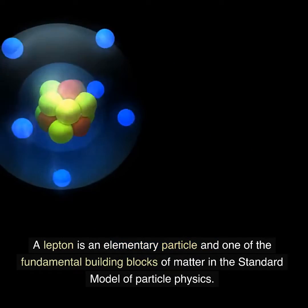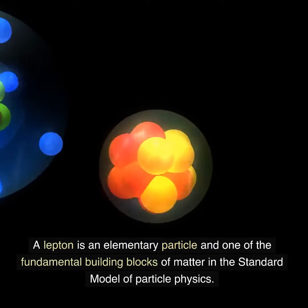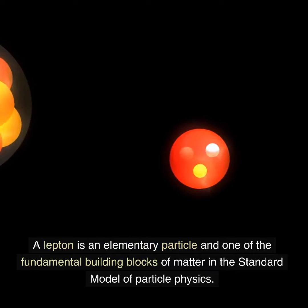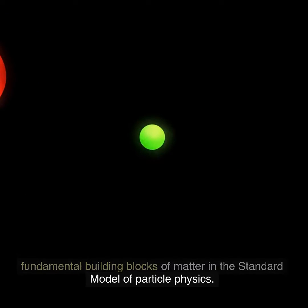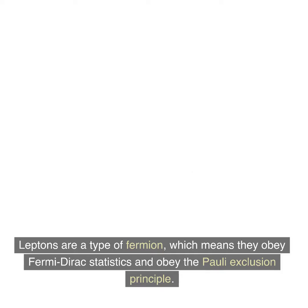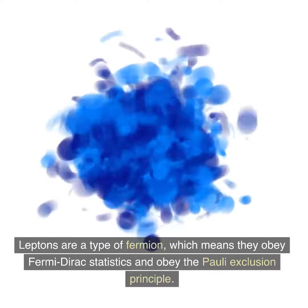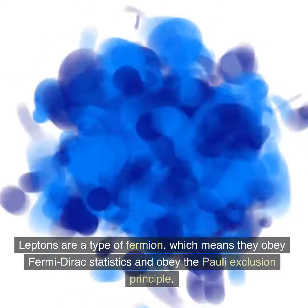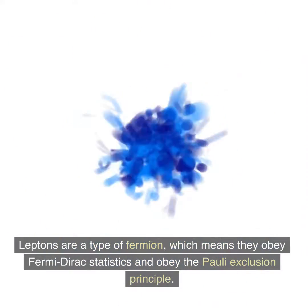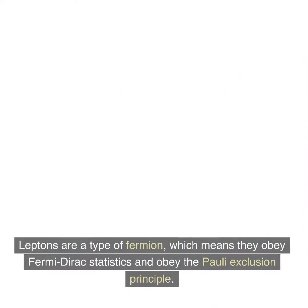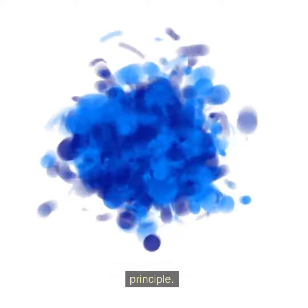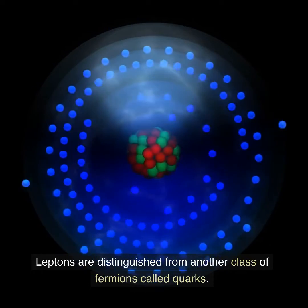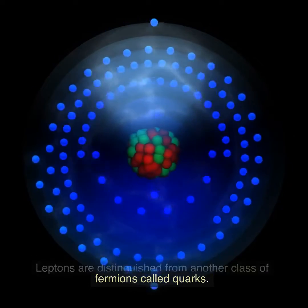A lepton is an elementary particle and one of the fundamental building blocks of matter in the standard model of particle physics. Leptons are a type of fermion, which means they obey Fermi-Dirac statistics and obey the Pauli exclusion principle. Leptons are distinguished from another class of fermions called quarks.